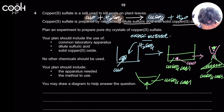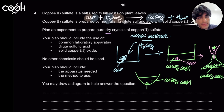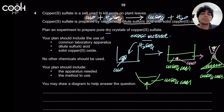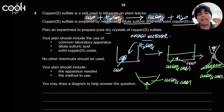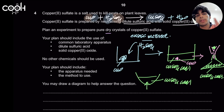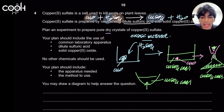Some students might ask whether 'dry crystals' means anhydrous. The answer is no. If the examiner meant anhydrous, they would specify it, and you would heat to dryness rather than to the point of crystallization, removing all water molecules to produce a white crystal. When the examiner says 'dry,' it just means you dry the crystals by gently sandwiching them between two filter papers.